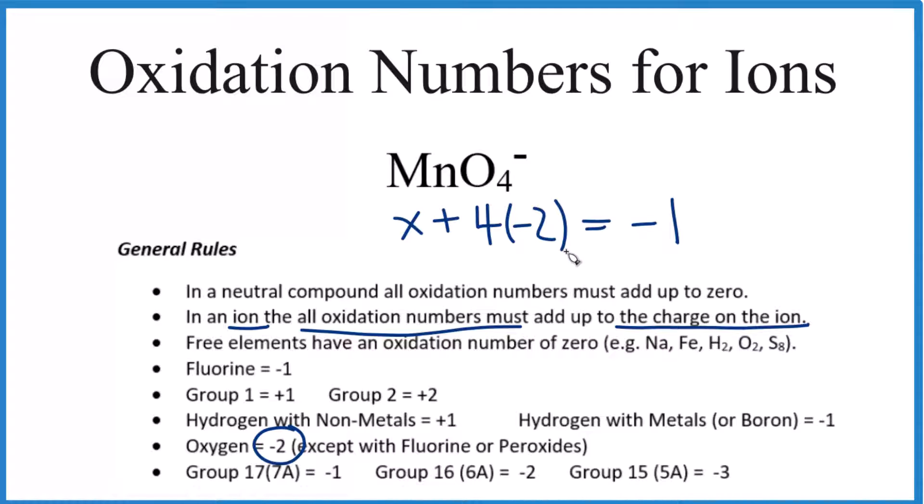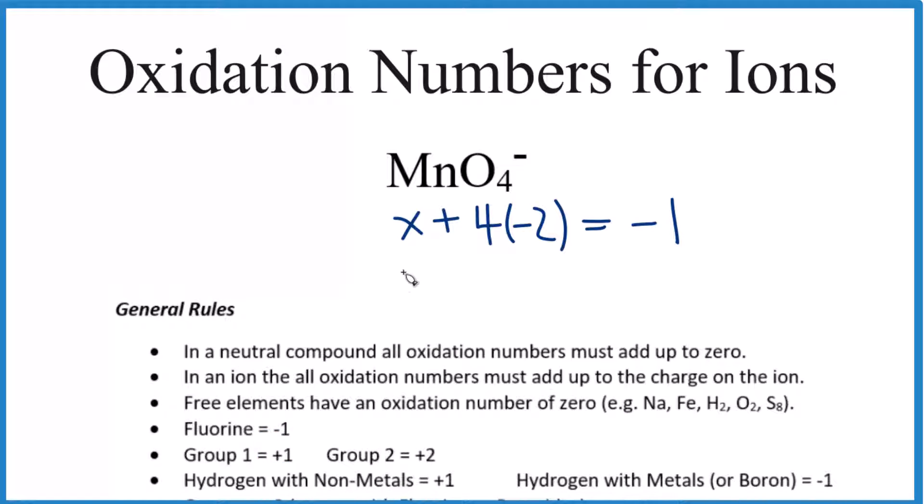So if we do the math here, we have x plus a negative 8, so x minus 8 equals negative 1. Add 8 to both sides, we end up with x equals a positive 7. So the oxidation number on the manganese here, that's plus 7. We said the oxygen, each one, would be minus 2. All of this here, when we factor in that we have 4 oxygens, will equal 1 minus.